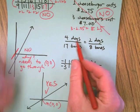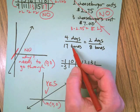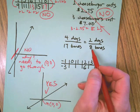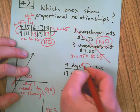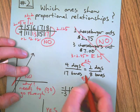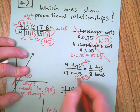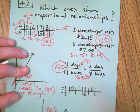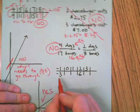Couple left here. Four dogs, 17 bones, two dogs, eight bones. If I go this way it's times two. If I multiply eight by two I get 16, so that means no, not proportional.